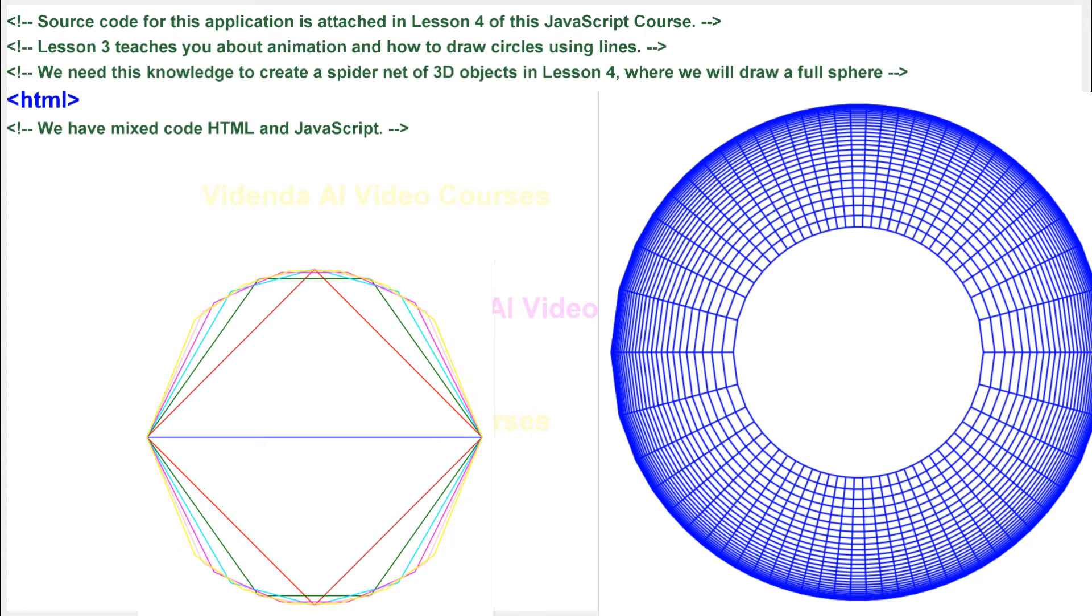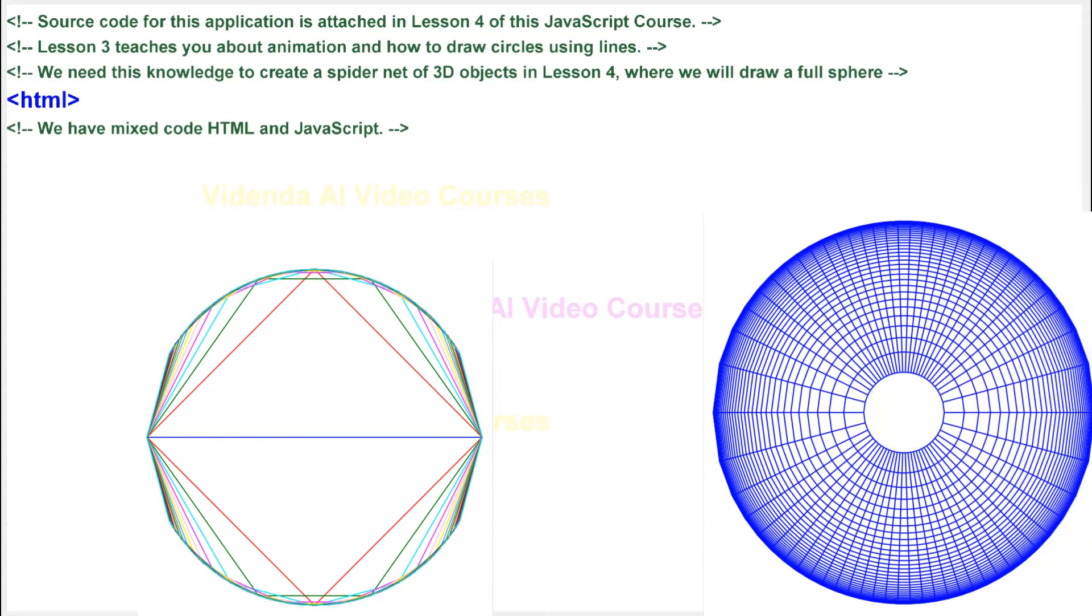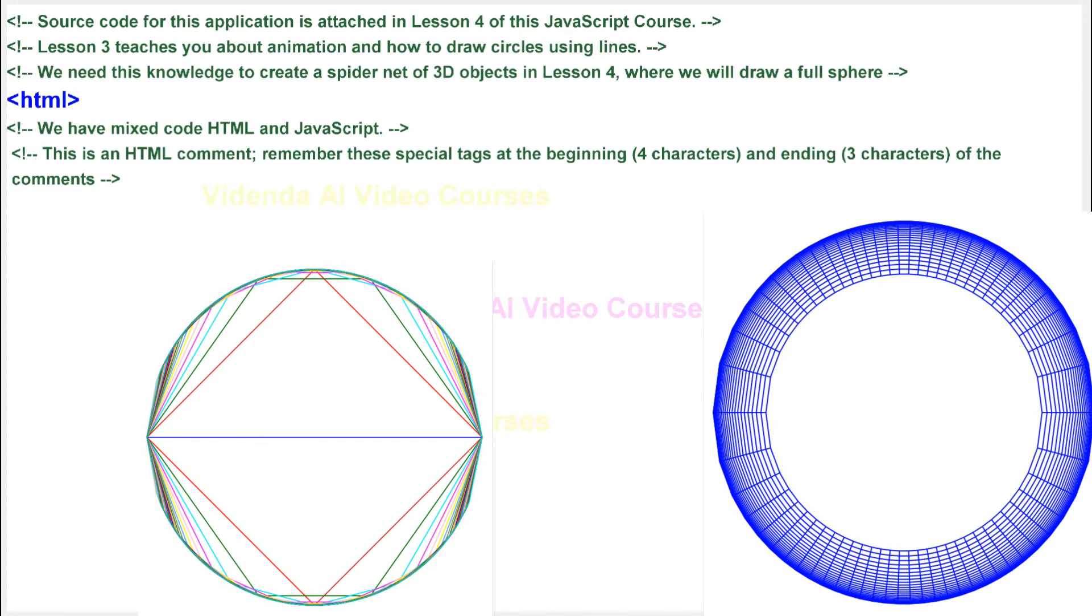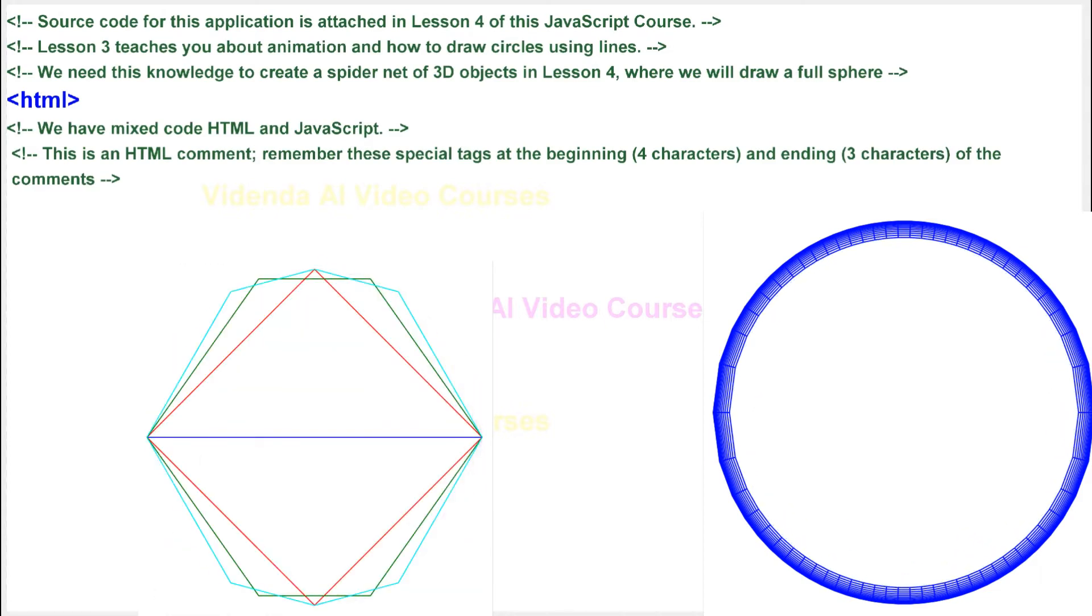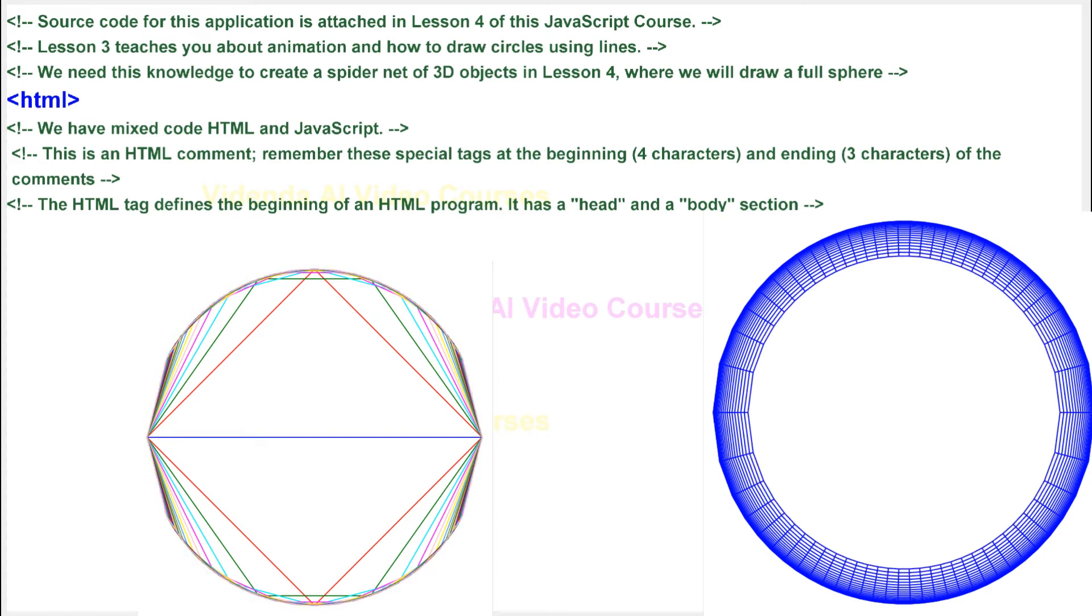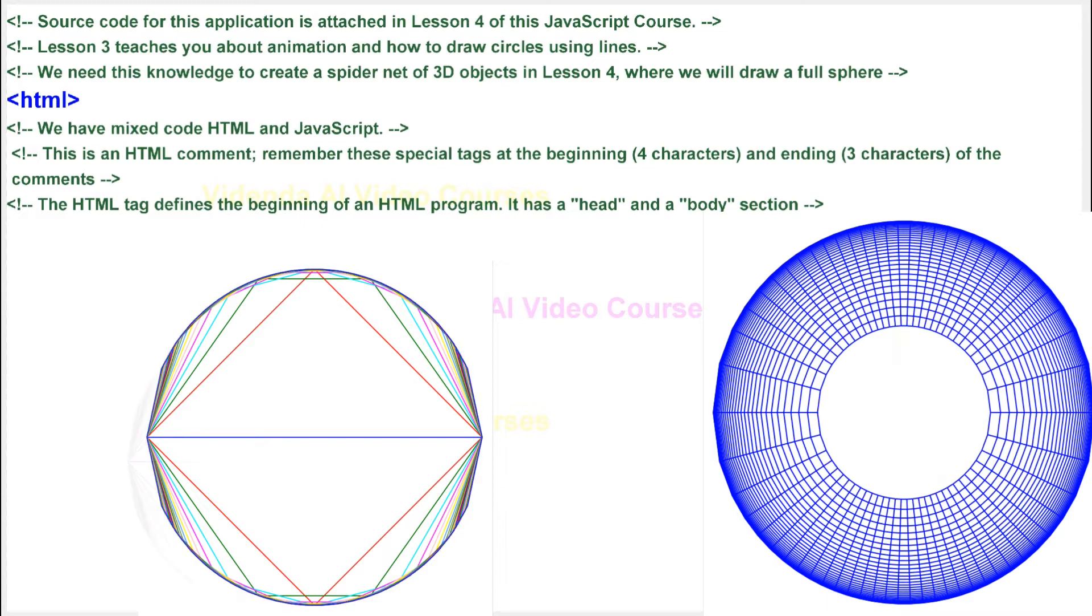We have mixed code HTML and JavaScript. This is an HTML comment. Remember these special tags at the beginning, 4 characters, and ending, 3 characters, of the comments. The HTML tag defines the beginning of an HTML program. It has a head and a body section.